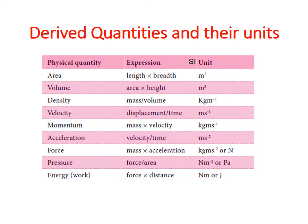That will be all for today. Just to recap: there are two types of physical quantities — derived quantities and fundamental quantities. Derived quantities are dependent on other physical quantities, whilst fundamental quantities are independent of other physical quantities.